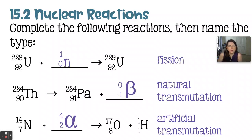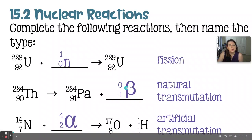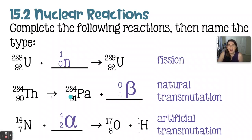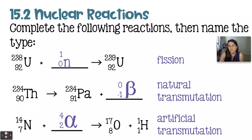Next, we have thorium-234 becoming protactinium-234. The mass number is not changing, so in my blank I need a zero on the top, which would be beta positive, beta negative, or gamma. Thorium with an atomic number of 90 is becoming protactinium-91, so in order to balance that I need a negative one on the bottom for the beta — making it beta negative, because 91 minus one gives us 90. This is a natural transmutation because there is only one reactant; the thorium is just becoming protactinium on its own. It would be an artificial transmutation if a neutron were launched at the original reactant, but with only one reactant, it is natural transmutation.